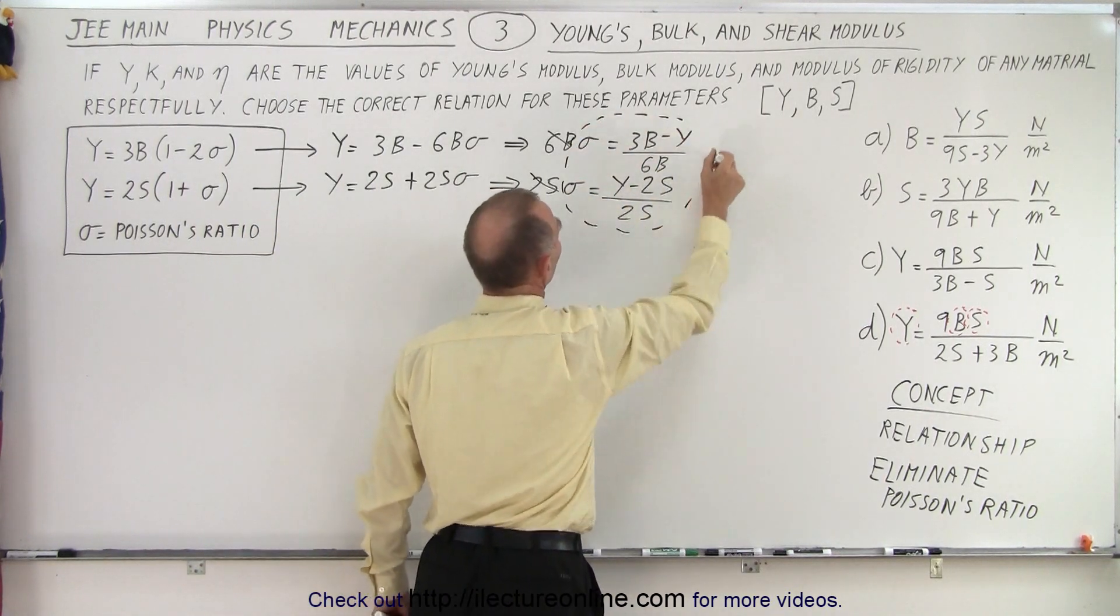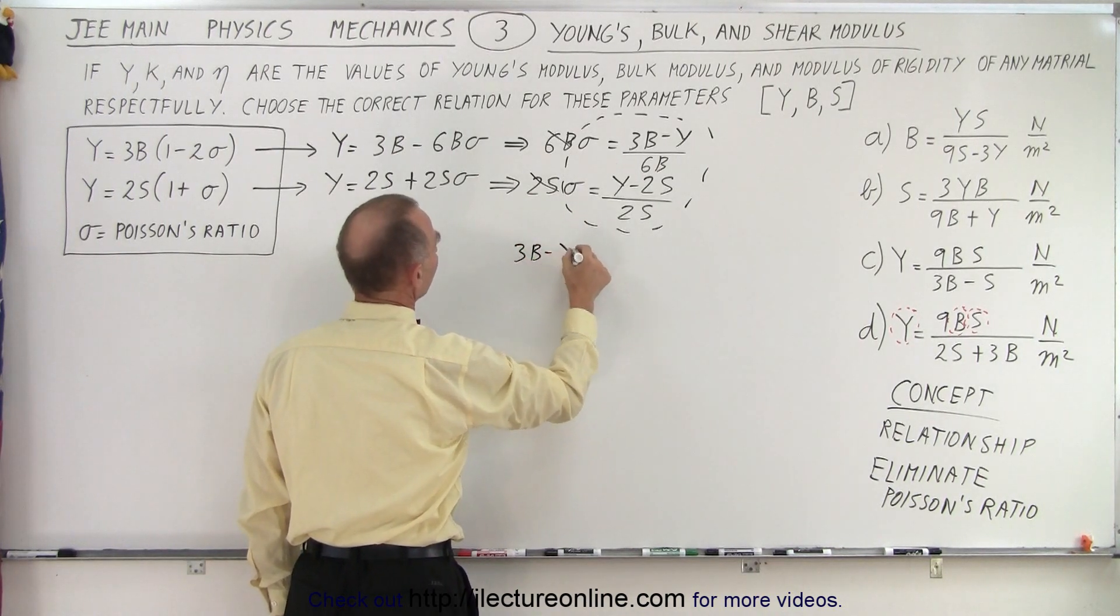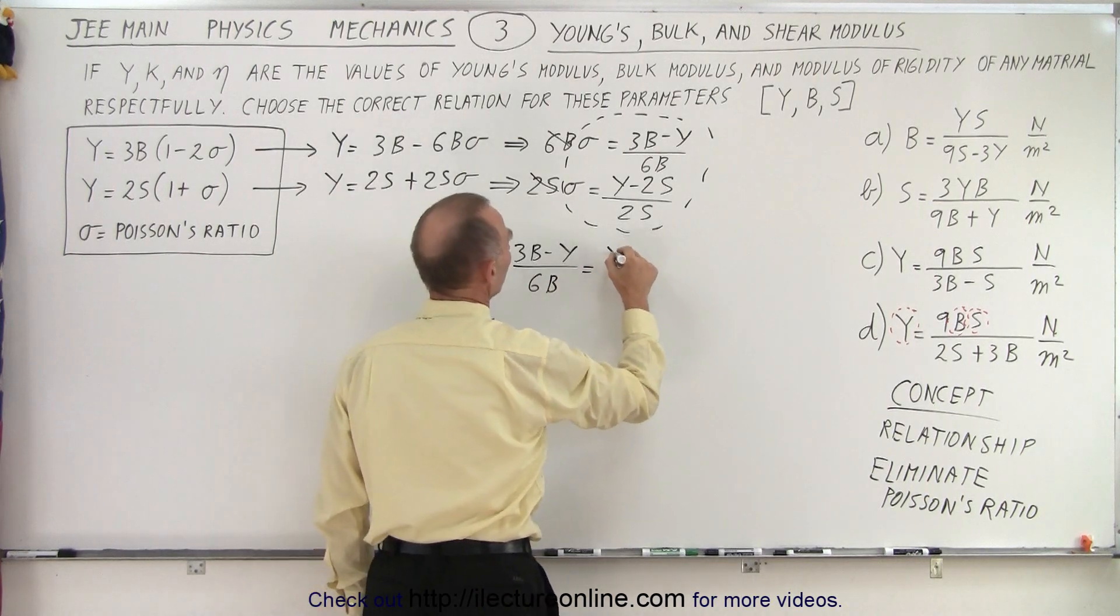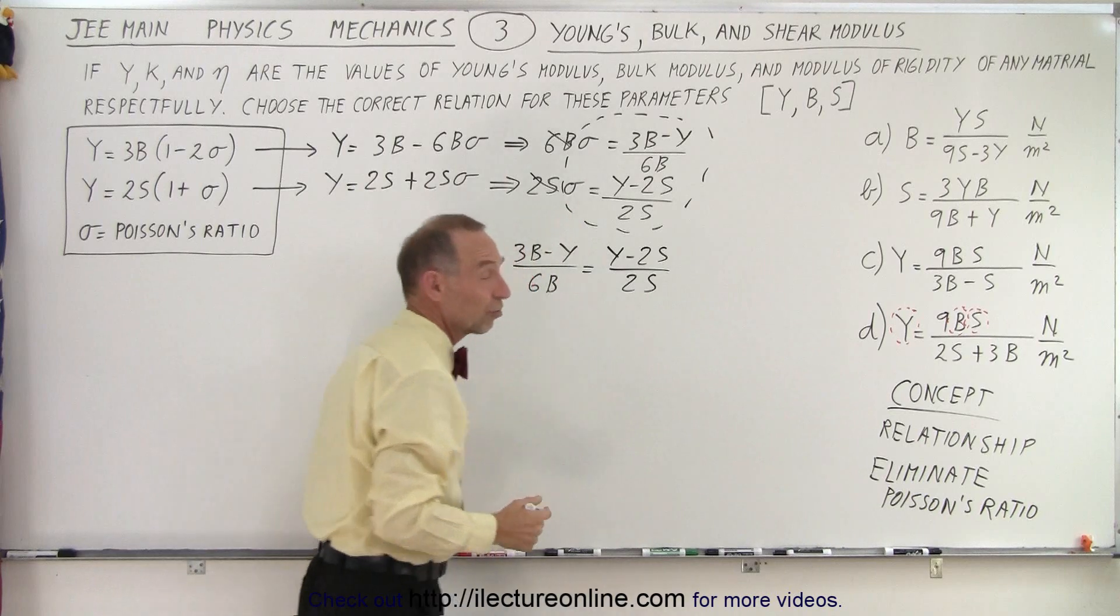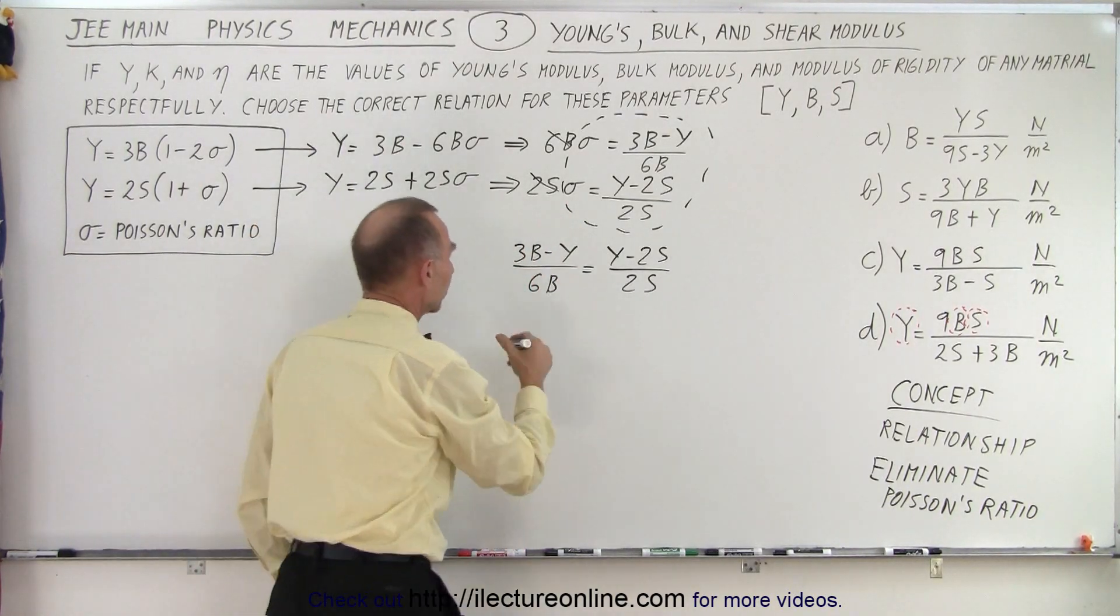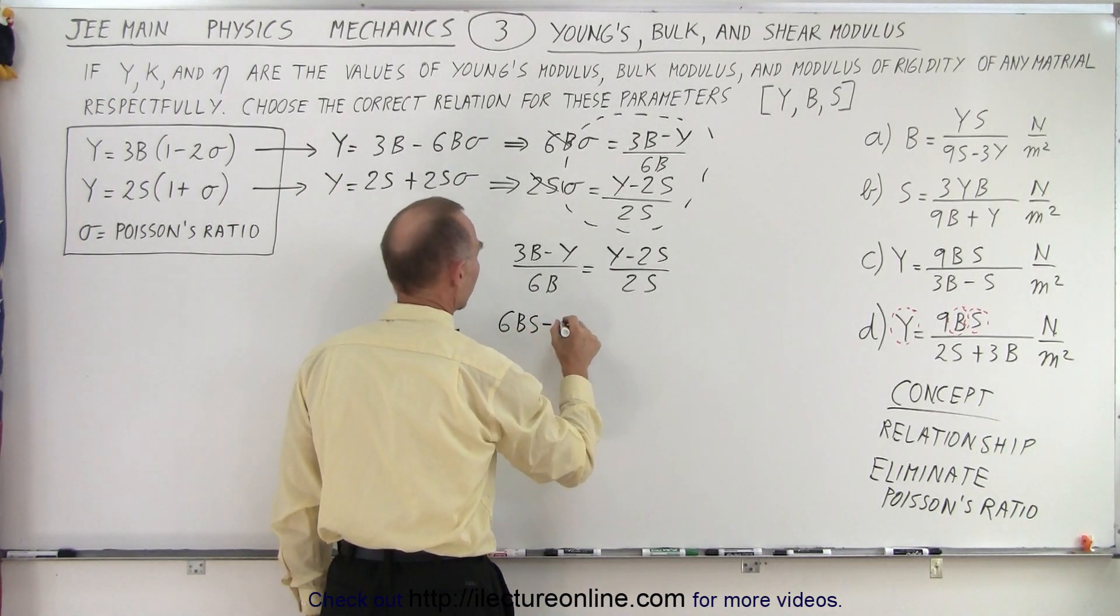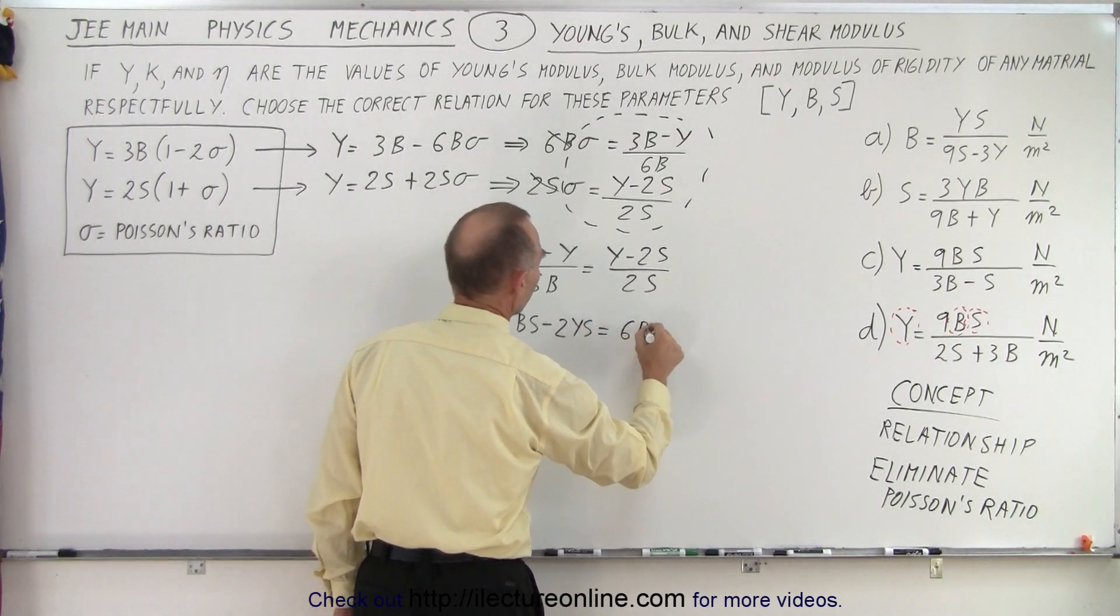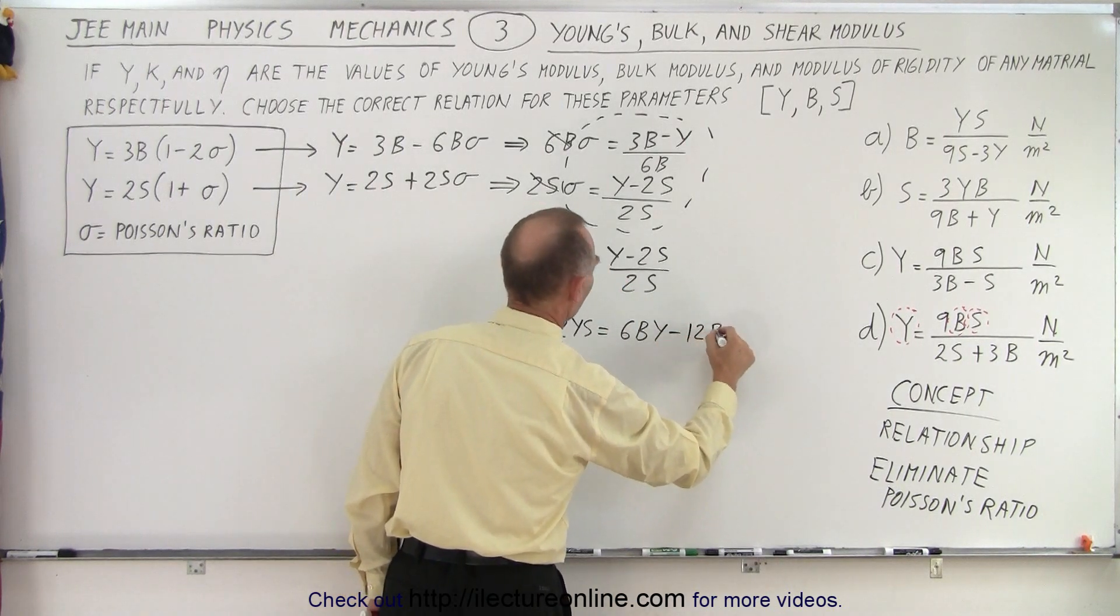So now we can go ahead and set those equal to each other. So in this case, we can write that 3B minus Y over 6B must therefore be equal to Y minus 2S over 2S. And then it's simply algebra to simplify this. So what we should do is cross-multiply. So we have 6BS minus 2YS is equal to 6BY, and 6B times that would be minus 12BS.